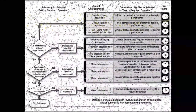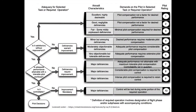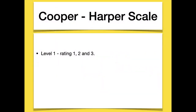Now let's come to the core topic — the Cooper-Harper Scale. The Cooper-Harper Scale consists of 4 levels and a 10-point rating system. If the rating is 10, the condition is really bad and the aircraft should not be flown — improvement is a must. If the rating is 1, the handling quality is excellent and you can proceed with the mission. Based on this, the 10 rating points are divided into 4 different levels.